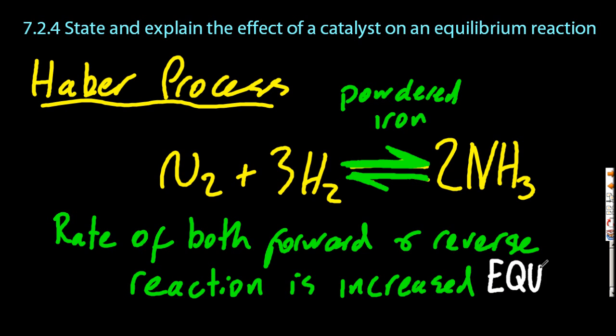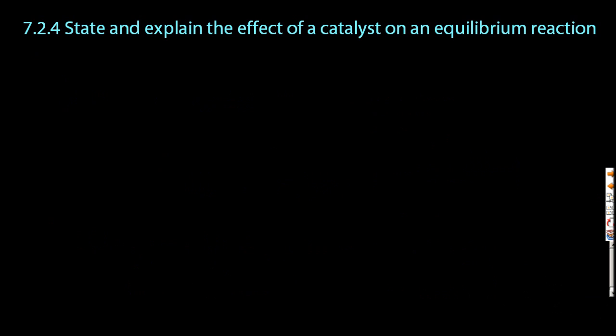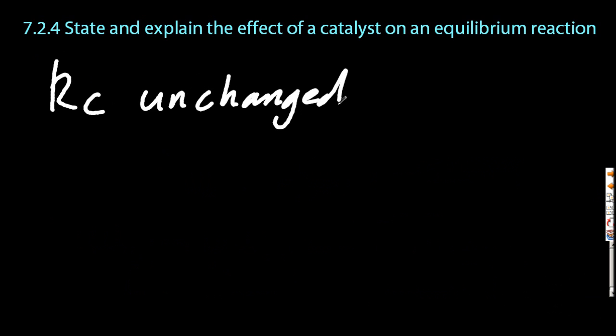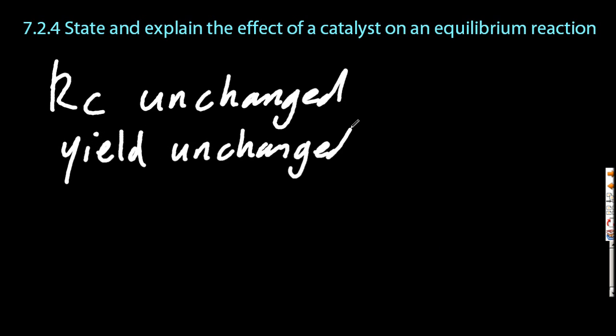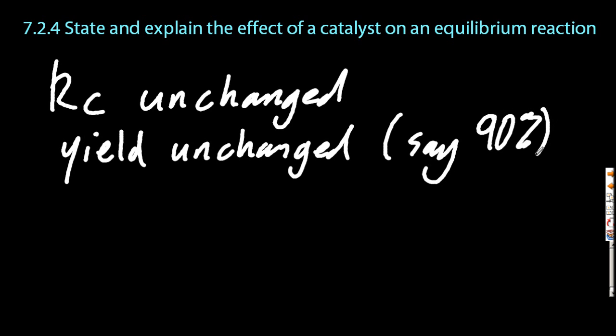It's important to say 'equally' to get your point in IB. So we have a paradox: Kc is unchanged, the yield is unchanged. If I had 90% yield before a catalyst, I had 90% yield after.